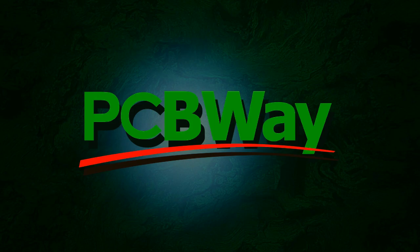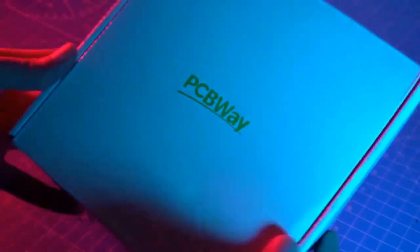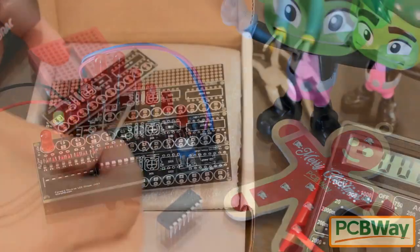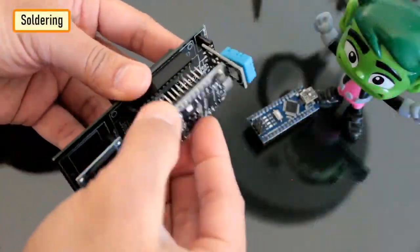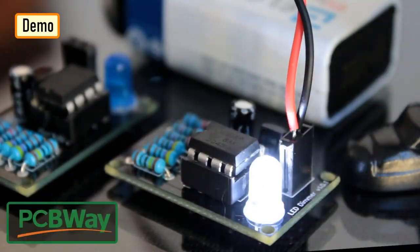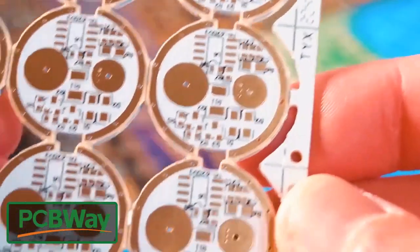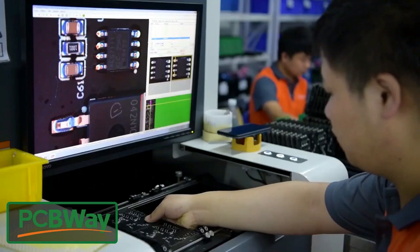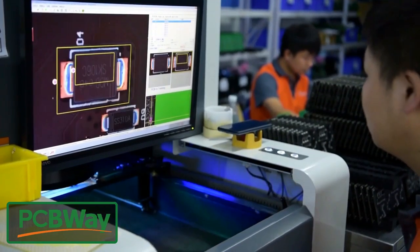This video is sponsored by PCBWay. PCBWay specializes in manufacturing of very high-quality, low-volume colored PCBs at a very budgetary price. In addition to standard PCBs you can order advanced PCBs, aluminum PCBs, rigid flex PCBs. They also provide PCB assembly and other related services which can meet your need at the greatest extent.